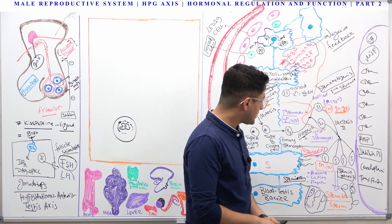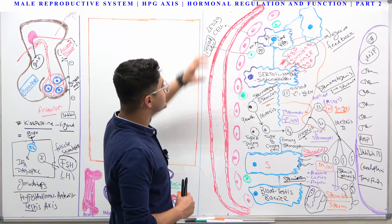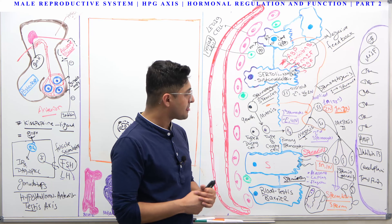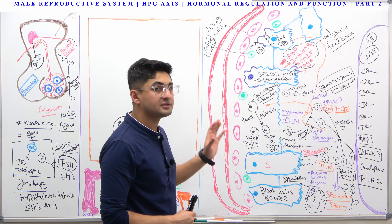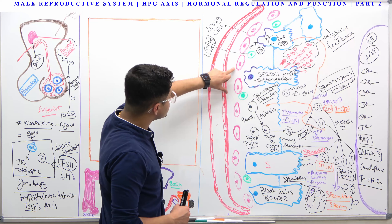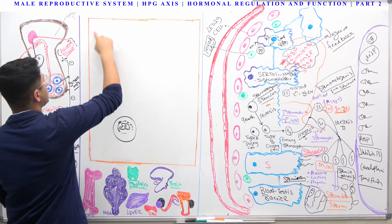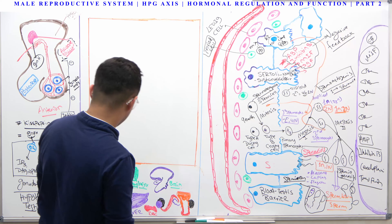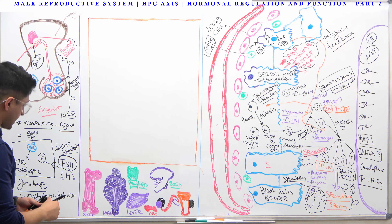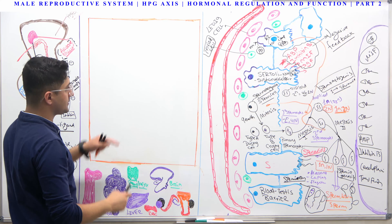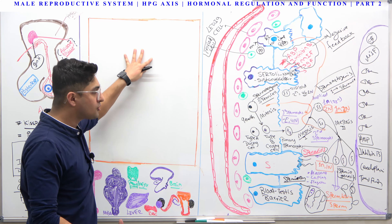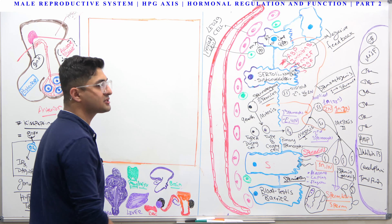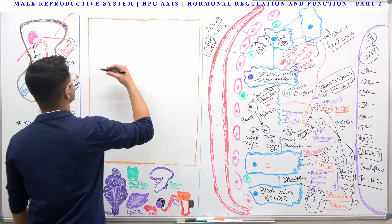To talk about how the sperm is maintained, we need to discuss the Leydig cells, because Leydig cells are the ones that produce testosterone — they produce androgens. So how does the Leydig cell produce androgens? In order to make androgens, what do we need? You guys remember — we need cholesterol. And where does the cholesterol come from? From lipoproteins — remember lipoprotein synthesis from biochemistry.